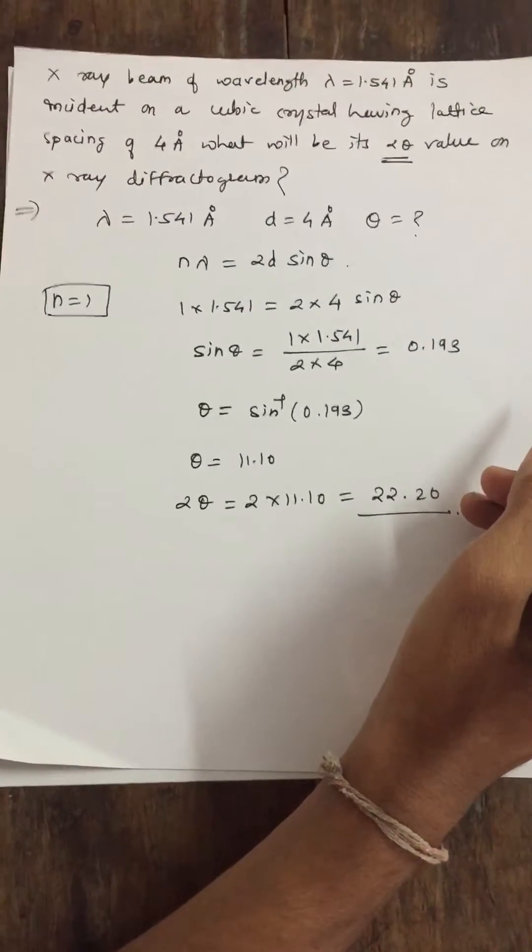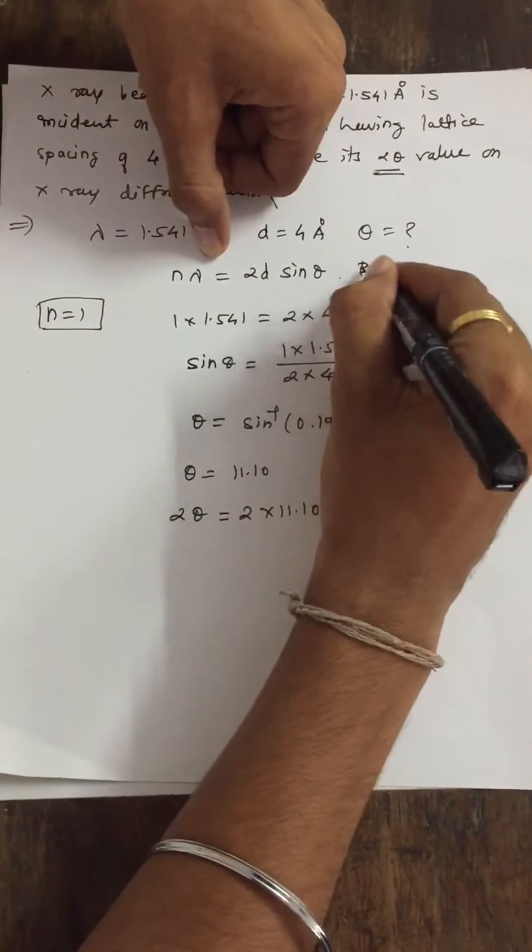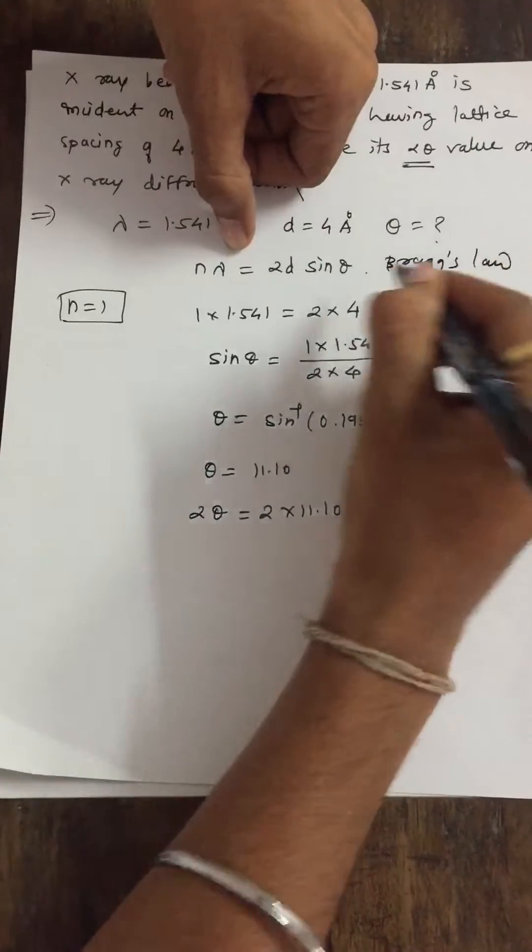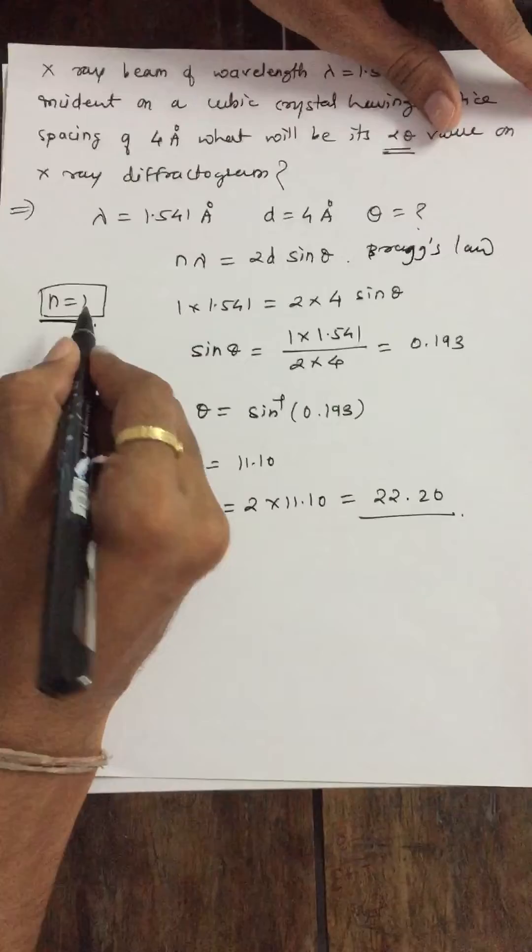First of all, we can calculate theta by using Bragg's law. This is Bragg's law: n lambda equals 2d sin theta. For this condition we have to take n equals 1.